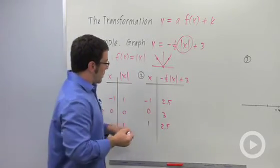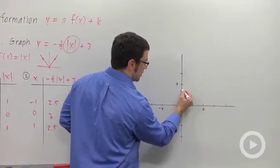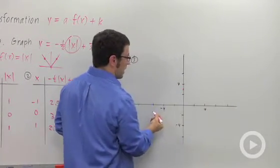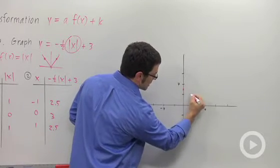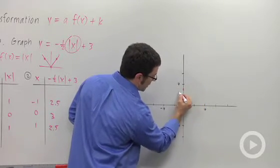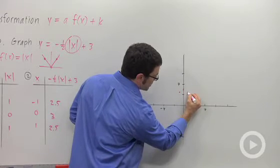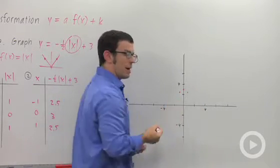That's not a bad start. Let's plot these points. We've got 0 comma 3. This is 2, 3. We've got negative 1 comma 2.5. So that's negative 1 is here, 2.5 is here. And 1 comma 2.5. Those points are kind of close to my y-intercept.